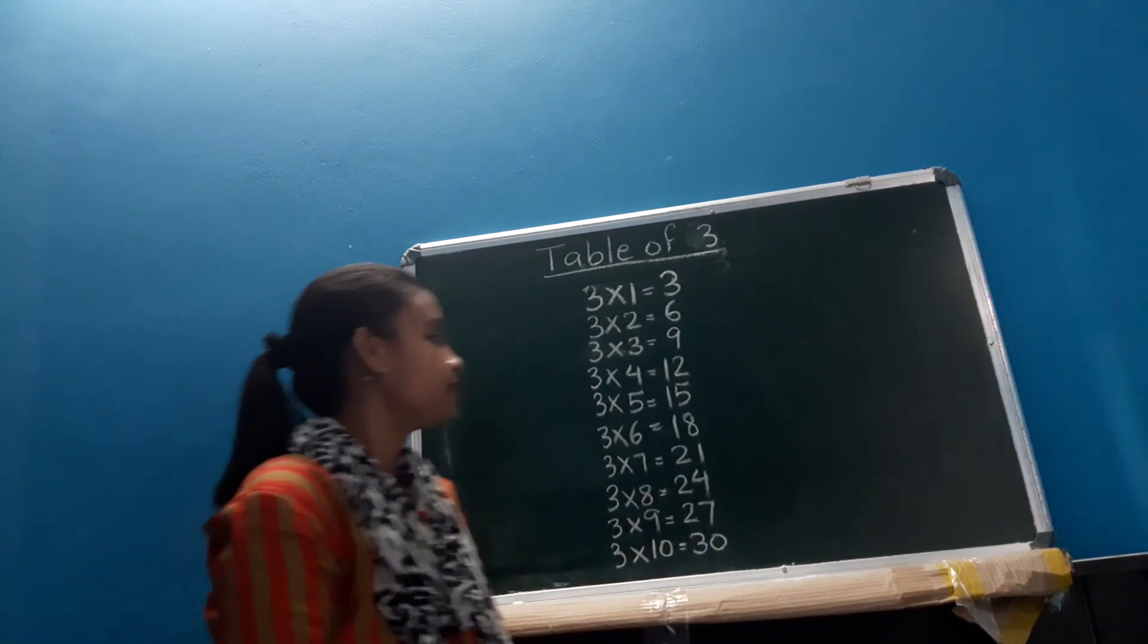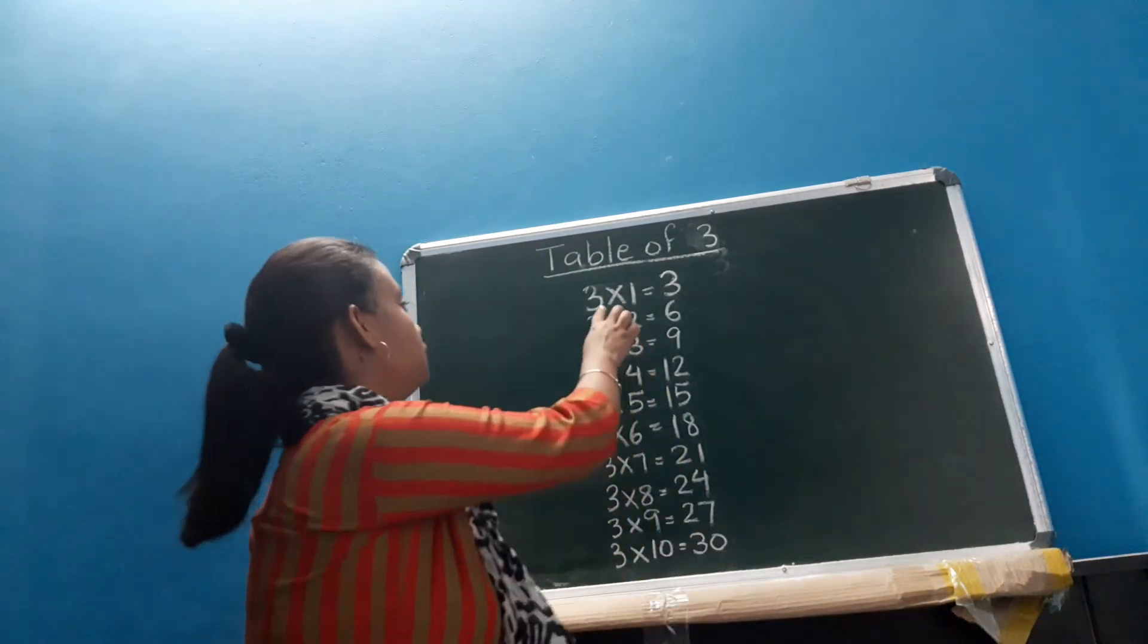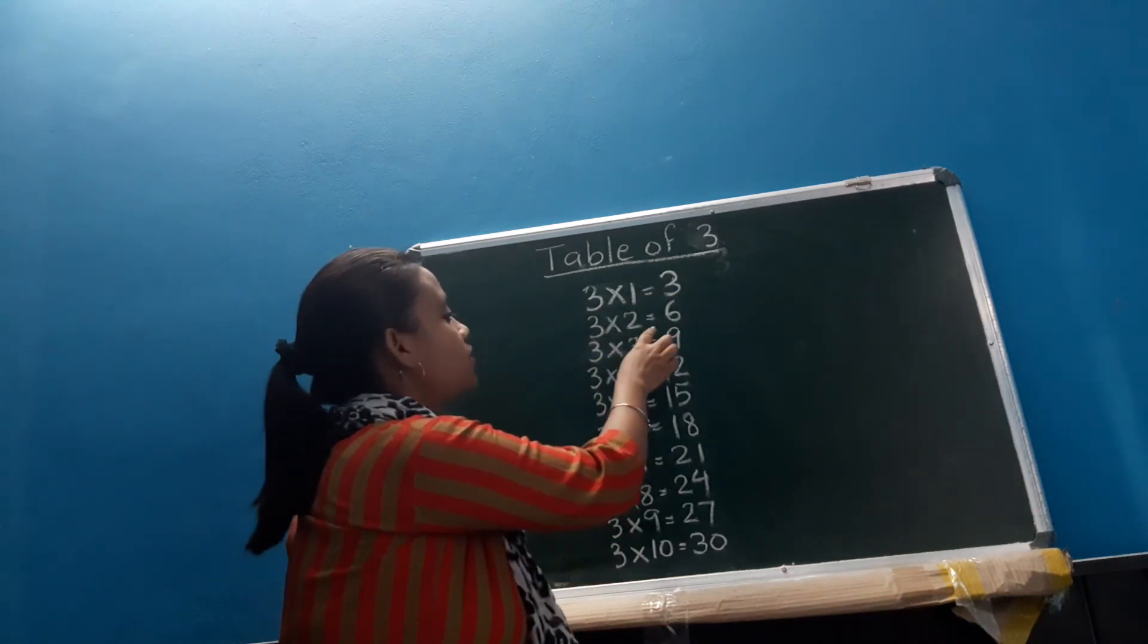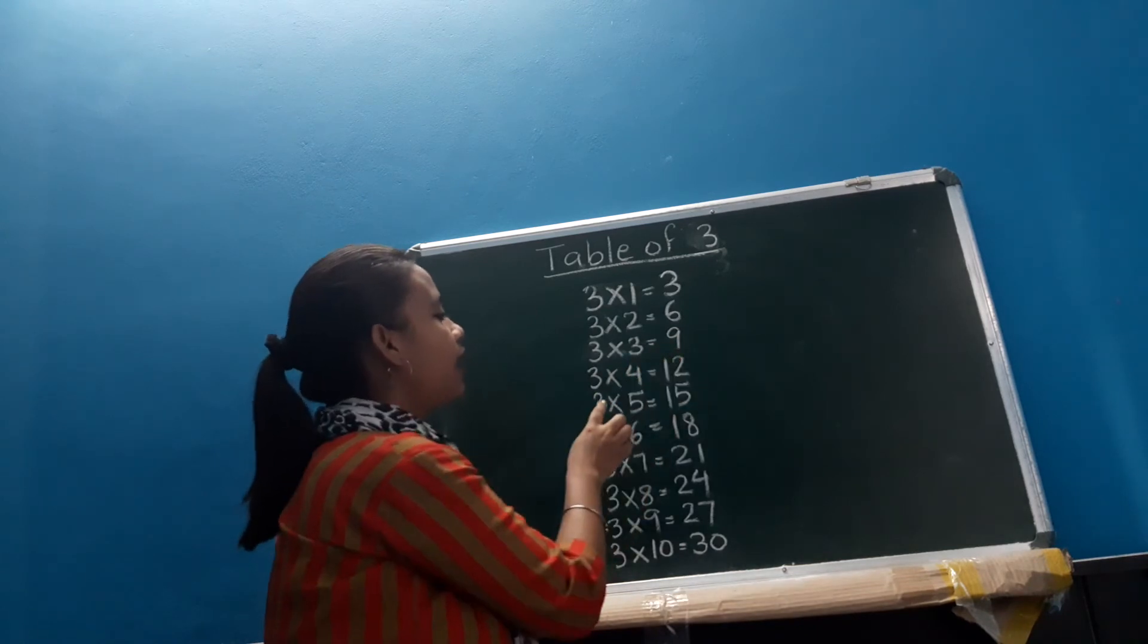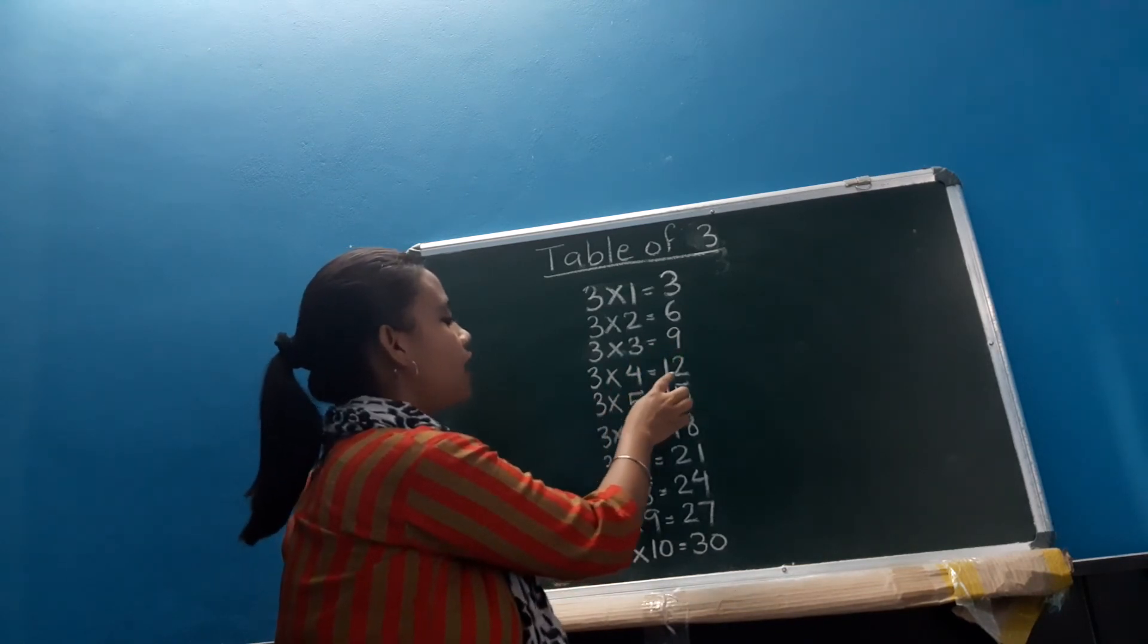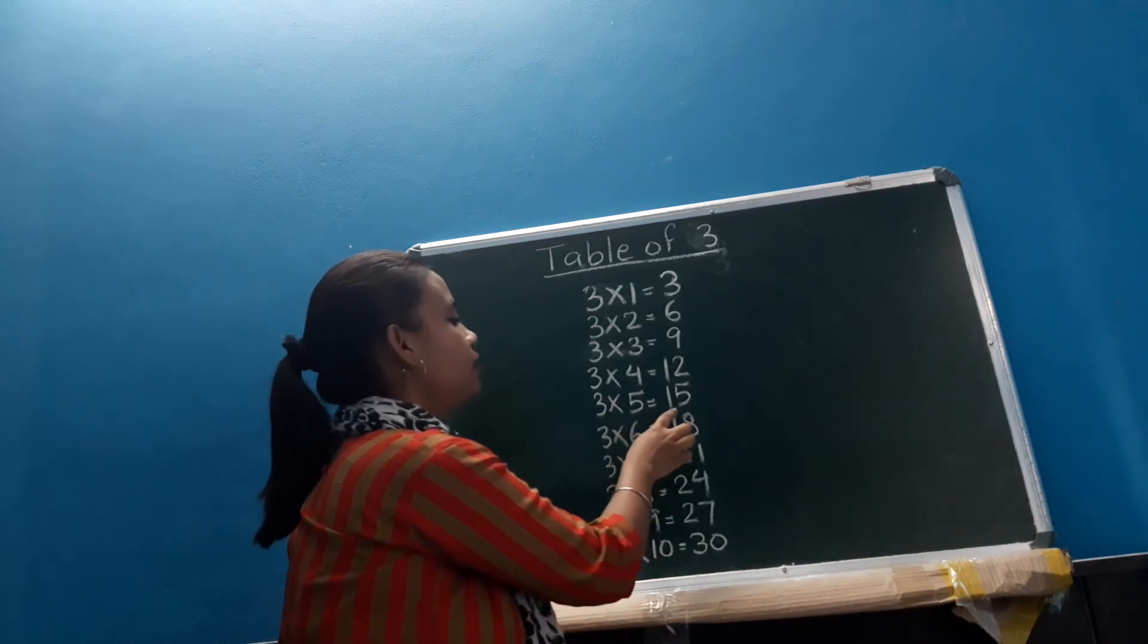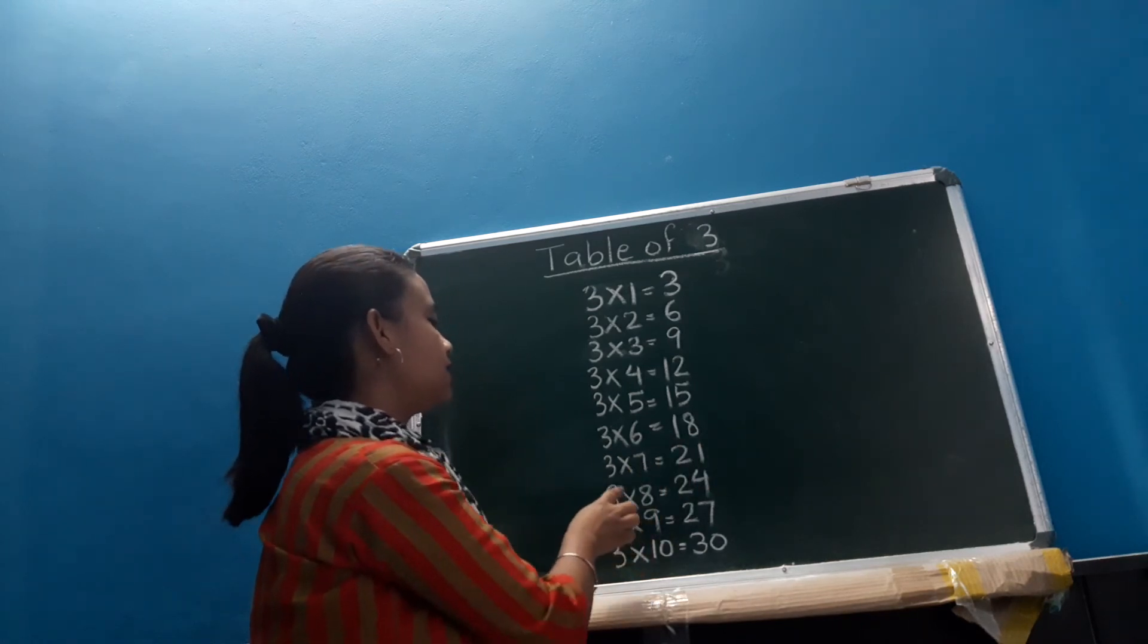Now let's repeat again for the last one. 3 1's are 3, 3 2's are 6, 3 3's are 9, 3 4's are 12, 3 5's are 15.